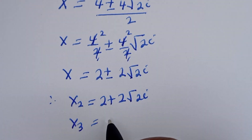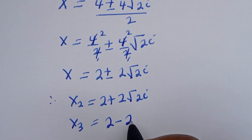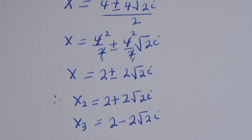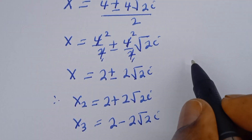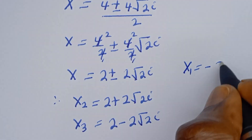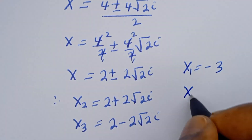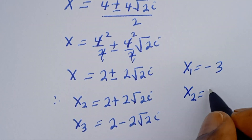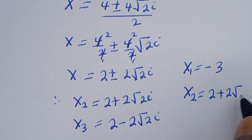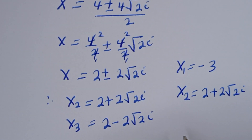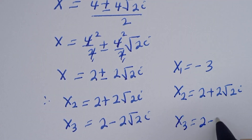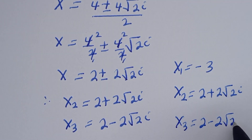Therefore s2 equals 2 plus 2 root 2 i, and s3 equals 2 minus 2 root 2 i. Our final answers are s1 equals minus 3, s2 equals 2 plus 2 root 2 i, and s3 equals 2 minus 2 root 2 i.